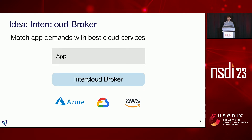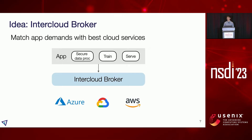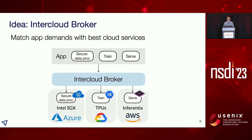In this work, we propose the idea of inter-cloud brokers as a mechanism to kickstart Sky Computing. The key idea is to match application demands with the best cloud services that can support these demands. For example, say we have an application with three stages: secure data processing, ML model training, and ML model serving. If the secure data processing stage requires Intel SGX, currently only Azure out of the top three clouds offers SGX instances, so the broker sends the first stage to Azure. For training, the broker may send it to Google to take advantage of their TPU accelerators. For inference, it may send it to AWS, which has custom Inferentia chips for low-cost inference.